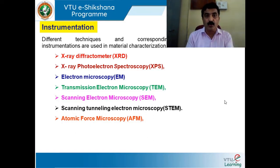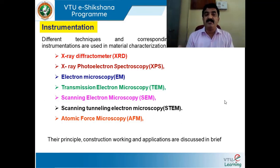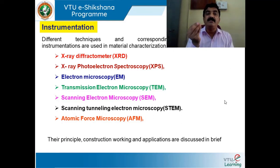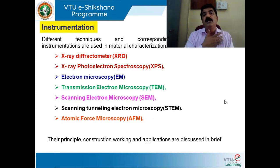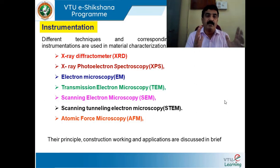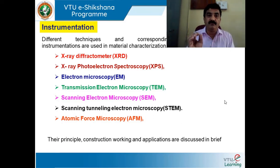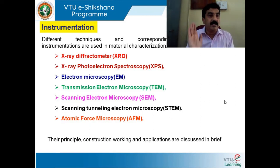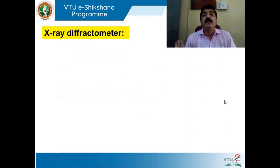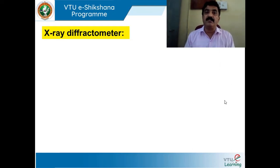In this tutorial and the next lecture, we focus only on the principle, construction, working, and very few applications of these instruments — this is a very brief study. Each instrument itself requires hours of detailed lecture. Because of the shortage of time and syllabus constraints, I limit myself only to principle, construction and application. Wherever required, I will go a little beyond the syllabus if time permits. Let us now take up the X-ray diffractometer — the first instrument in the list. Its short form is XRD.